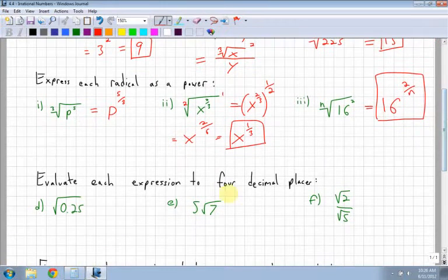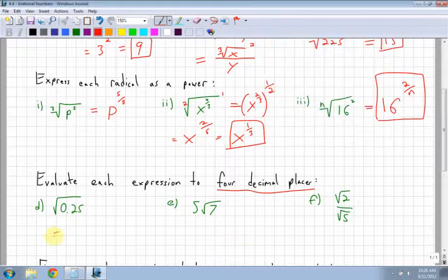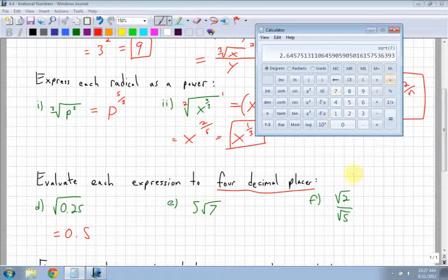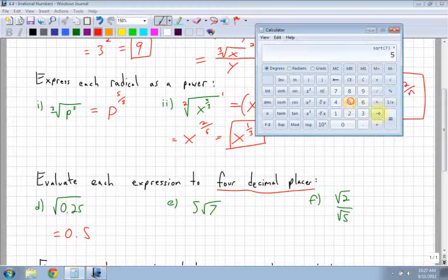Now we have evaluate each expression to 4 decimal places. Whenever you see something like this, you always want to bring up your calculator, because you're not going to have to do these in your head. So let's look at the square root of 0.25. So 0.25 square root is 0.5. Next one, 5 root 7. So I have 5. Now I can't do this on this calculator like it's written, so I'm going to have to actually, first of all, do the square root of 7 first. And then in between the square root and the number in front is always multiplication. You always multiply the two values. So it's going to be times 5. So I get 13.23.